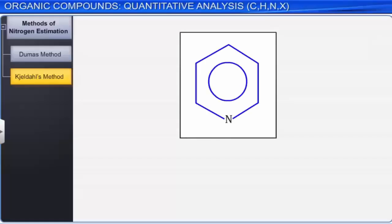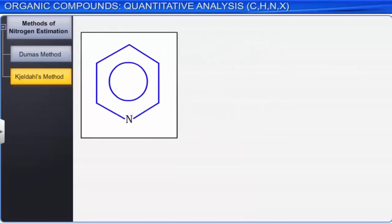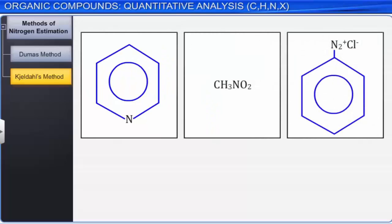It is important to note that Kjeldahl's method is not applicable when nitrogen is present in the ring, as well as in nitro and azo compounds, because the nitrogen of these compounds does not change to ammonium sulfate under these conditions.